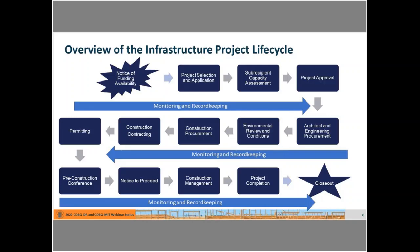Once the NOFA has been released, usually a local government, another state agency, a nonprofit, or another subrecipient will select a project and submit an application for funding. From there, typically the grantee will perform a subrecipient capacity assessment to determine whether the subrecipient has the capacity to carry out the proposed activity, and any additional measures or technical assistance needed to get them prepared to implement that project.